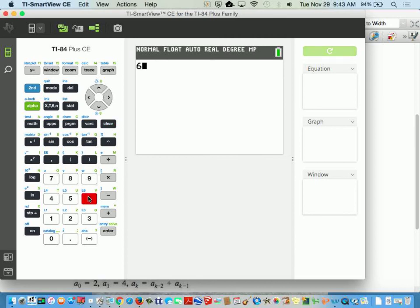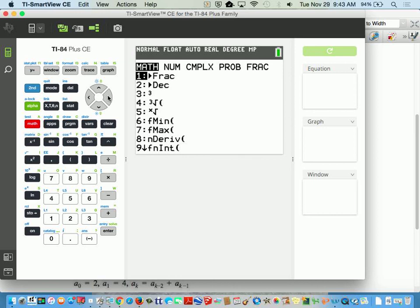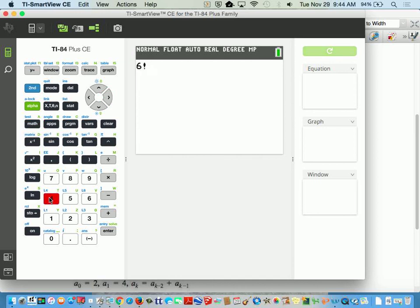So I want to do something like 6, math, slide over to the probability menu, number 4. So you want your number, then the exclamation point, and it will tell you 720.